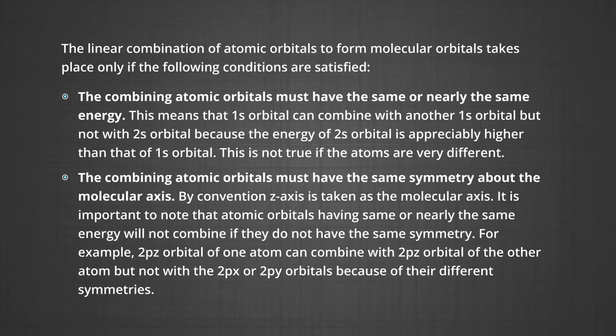The second rule is that the combining atomic orbitals must have the same symmetry about the molecular axis. By convention, the z-axis is taken as the molecular axis. It is important to note that atomic orbitals having the same or nearly the same energy will not combine if they do not have the same symmetry. For example, the 2p_z orbital of one atom can combine with the 2p_z orbital of the other atom, but not with the 2p_x or 2p_y orbital, because of their different symmetries.